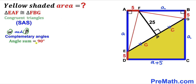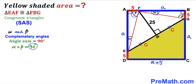Let's assume that alpha and beta are two complementary angles, meaning alpha plus beta equals 90 degrees. This angle is alpha, and since this is a 90-degree angle, this angle must be beta. Likewise, this angle is alpha, this is a 90-degree angle, so this angle must be beta. Since alpha plus beta equals 90 degrees, we conclude that angle EFG is 90 degrees.